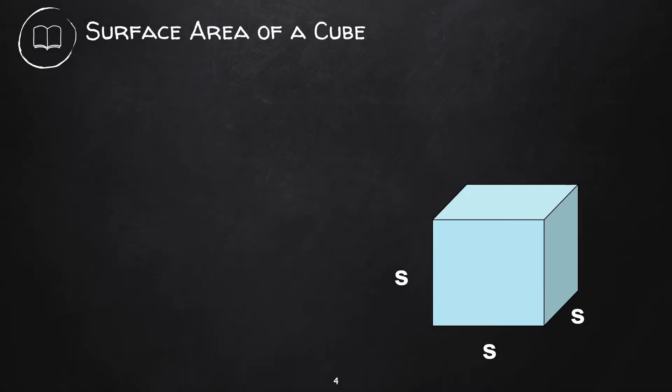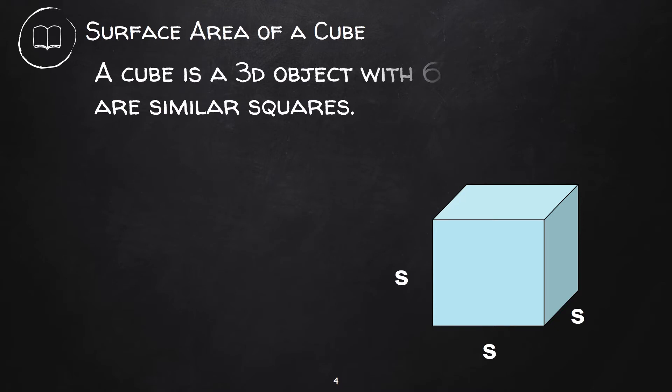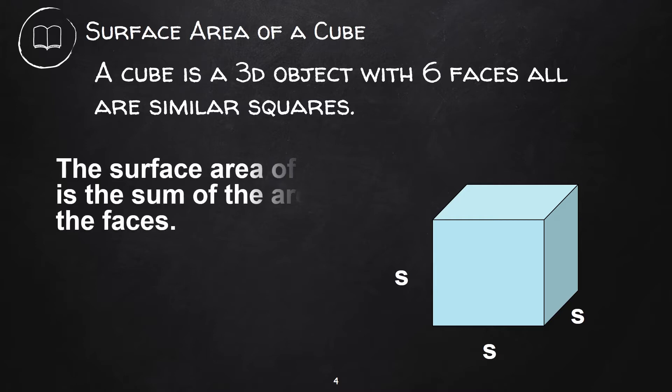The first figure we have is a cube. A cube is a 3D object with six faces all are similar squares. The surface area of a cube is the sum of the areas of the faces.